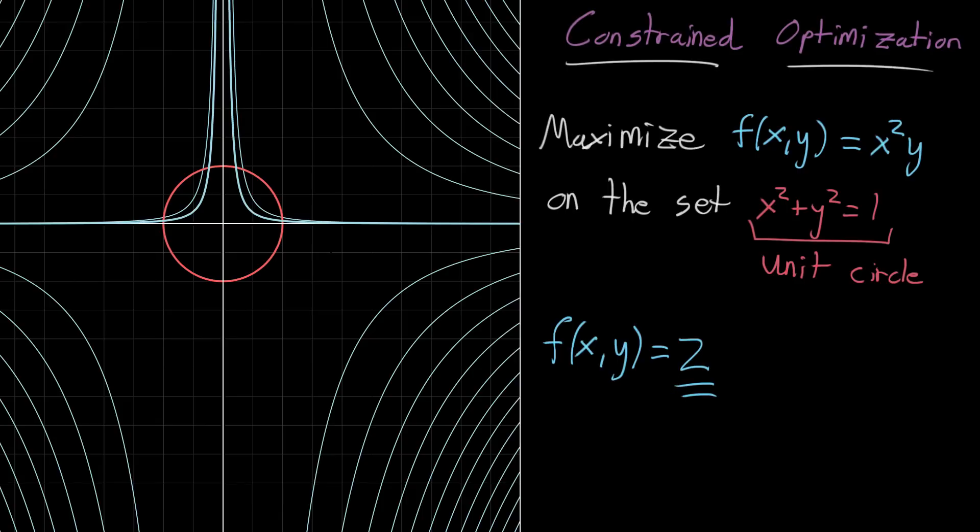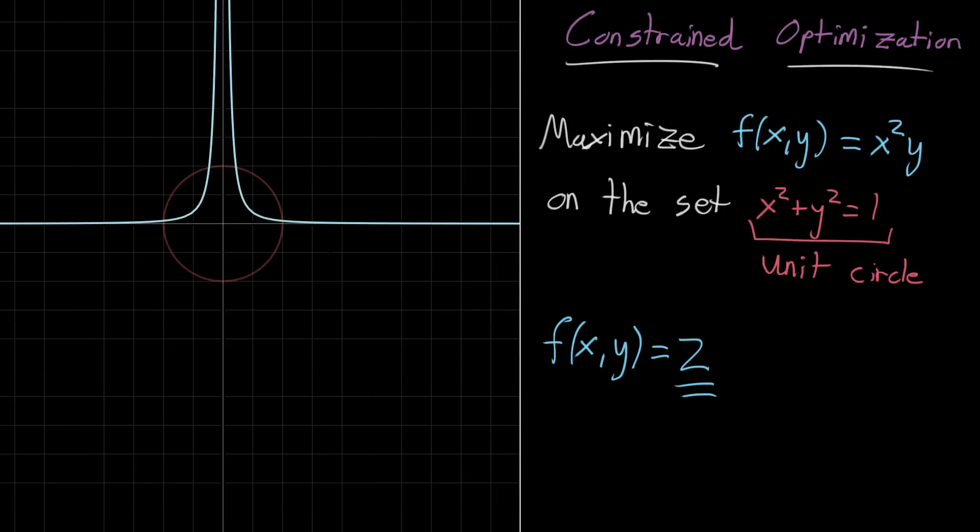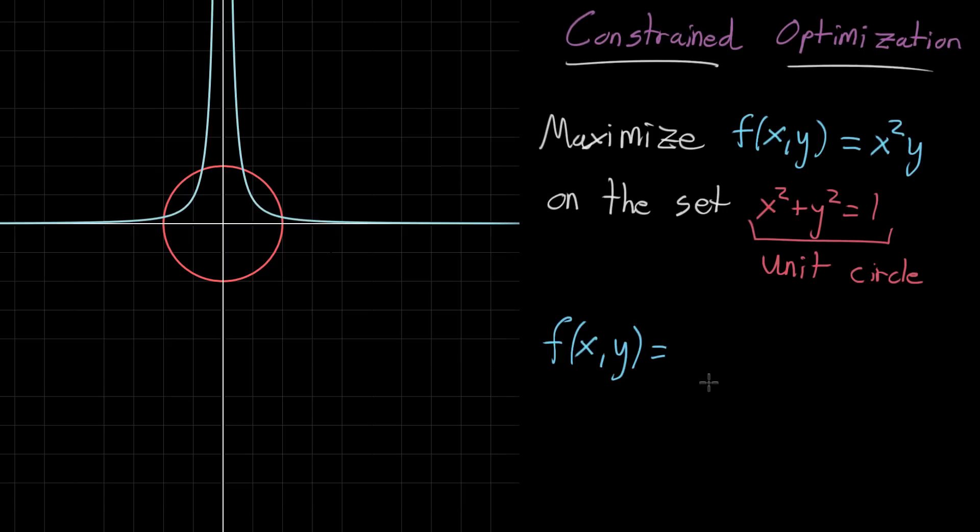So what I'm gonna do here is I'm actually gonna just zoom in on one particular contour line. So this here is something that I'm gonna vary, where I'm gonna be able to change what the constant we're setting f equal to is, and look at how the contour line changes as a result. So for example, if I put it around here-ish, what you're looking at is the contour line for f of xy equals 0.1.